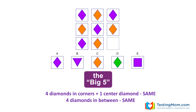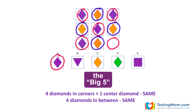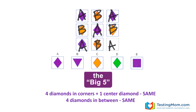Second, we have what we call the big five. I call it that because the four corners and the middle box have the same shape or figure inside, and the four boxes in between also have the same shape or figure inside. It's really easy to see here where there are five purple diamonds and four orange diamonds. A is the answer. You can also solve this by calling it an AB pattern — the figures inside the boxes alternate AB AB across nine boxes.